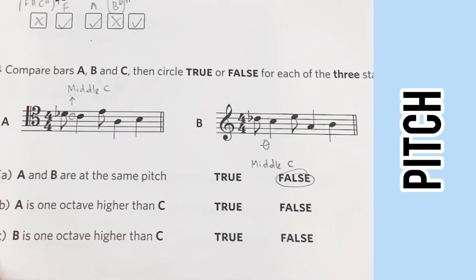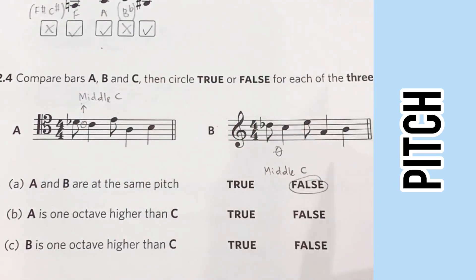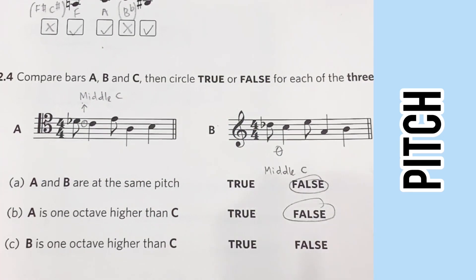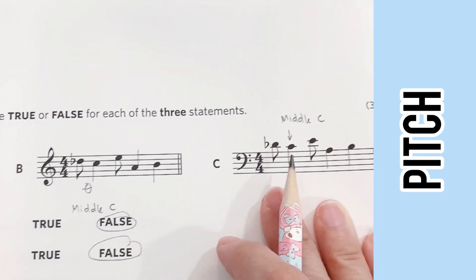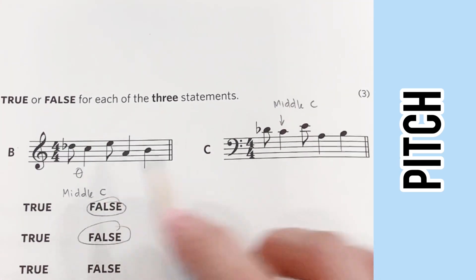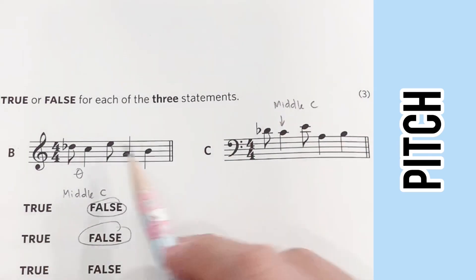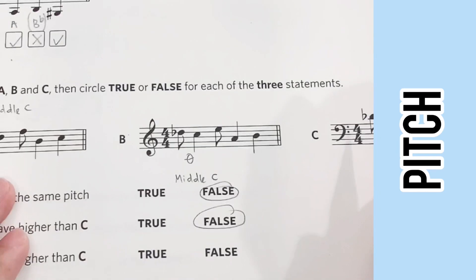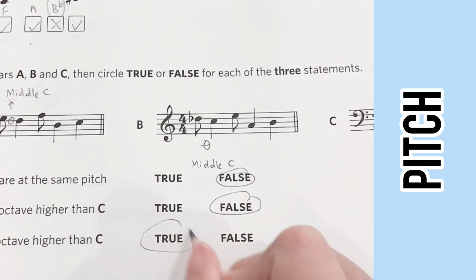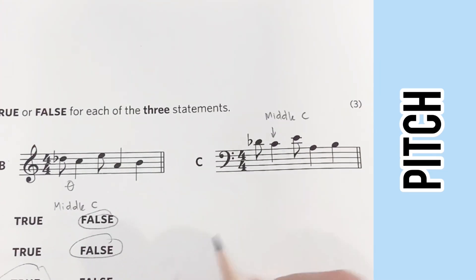B is one octave higher than C. So here we have D an octave higher than middle C, this is D near the middle C, and therefore this one is indeed an octave apart—so true.